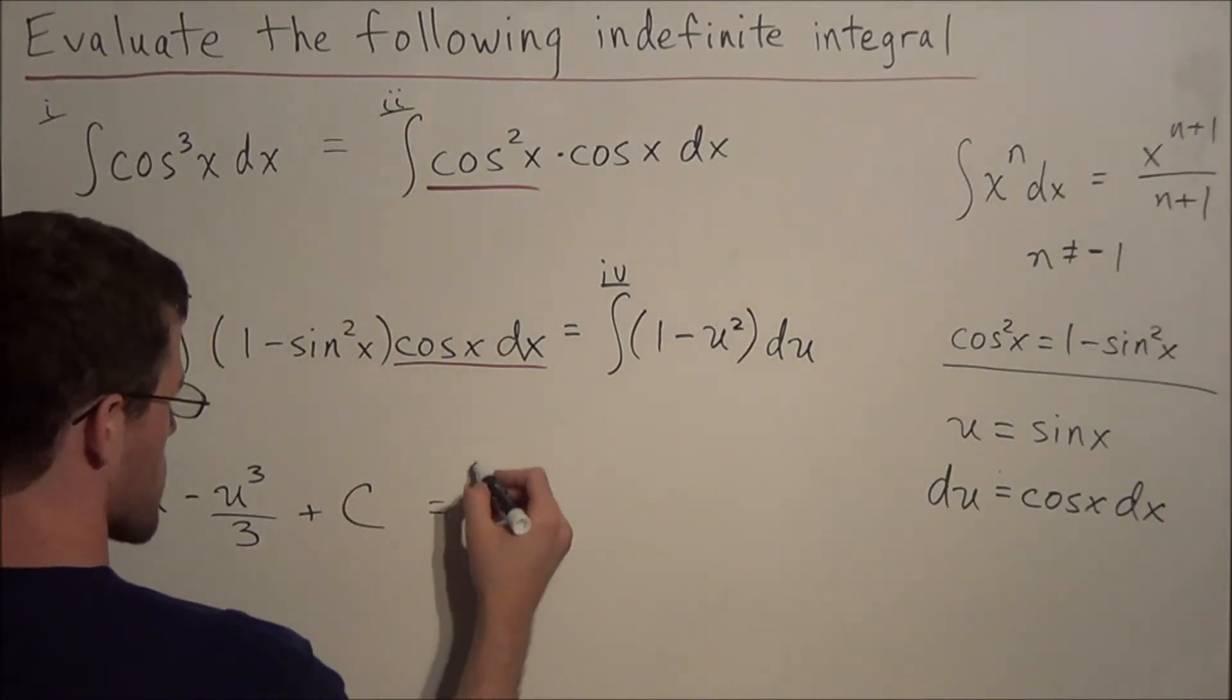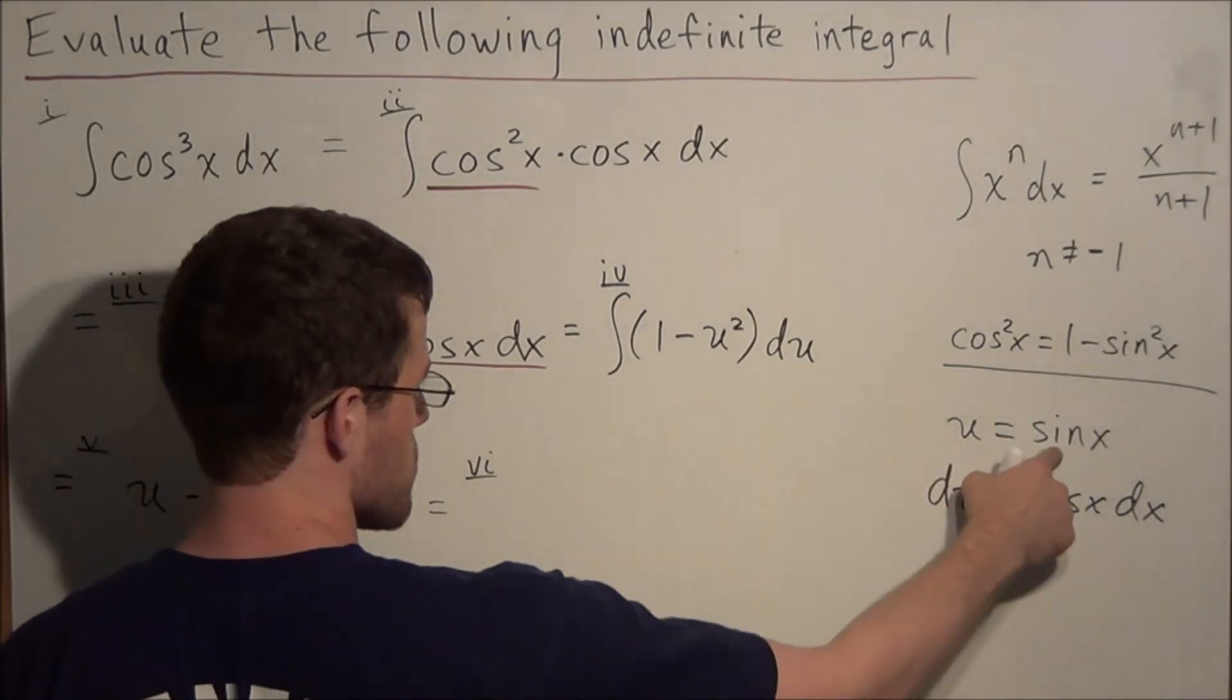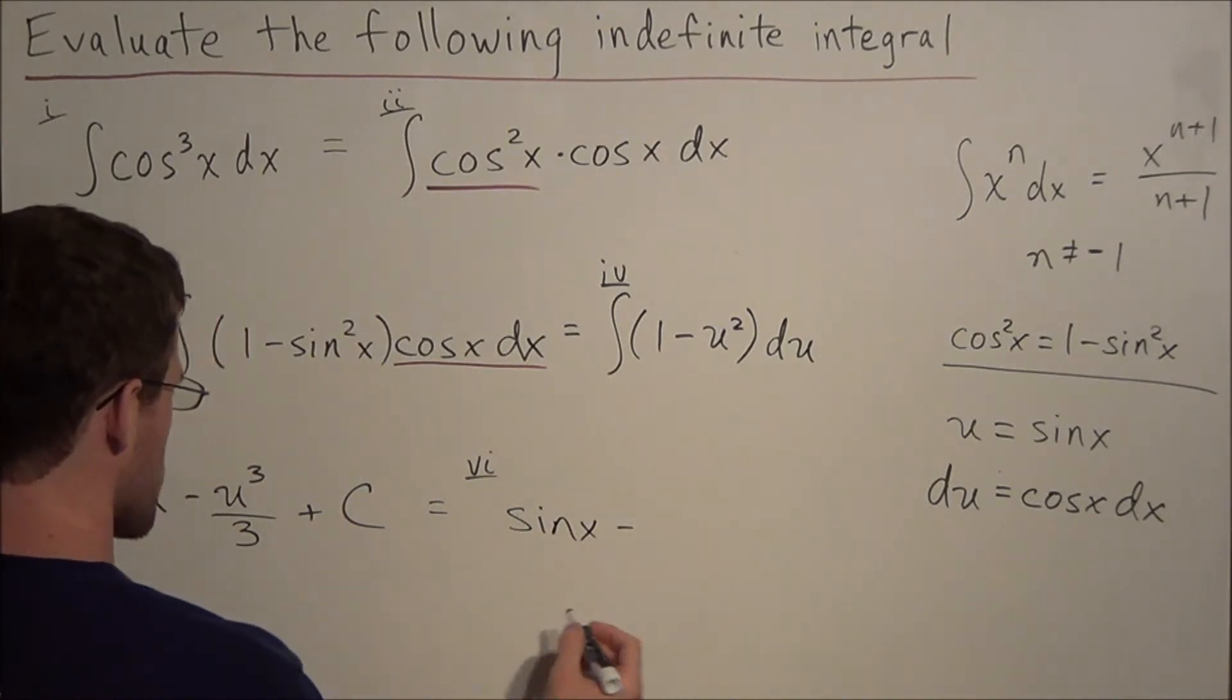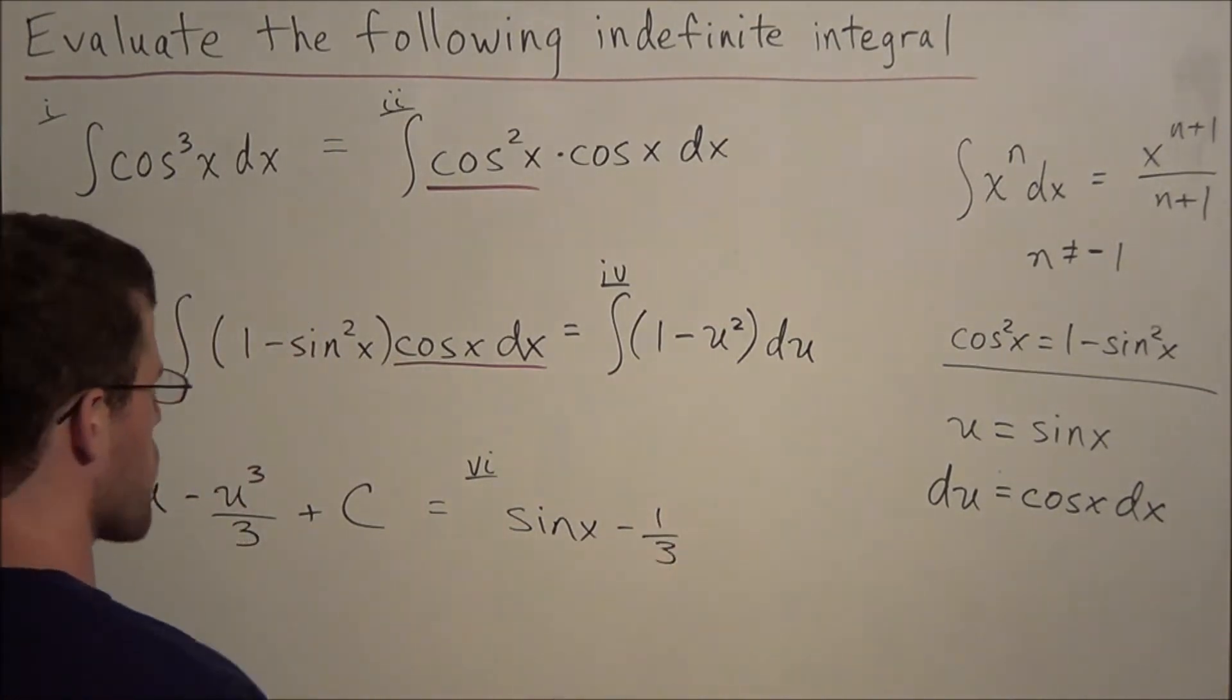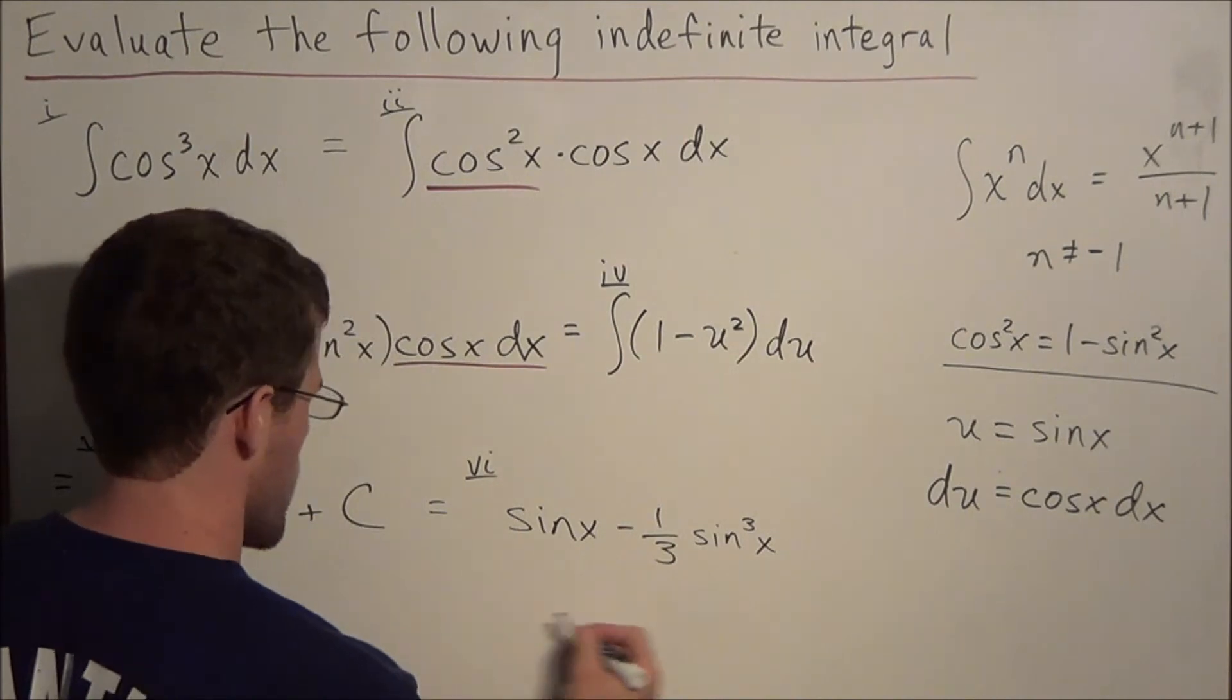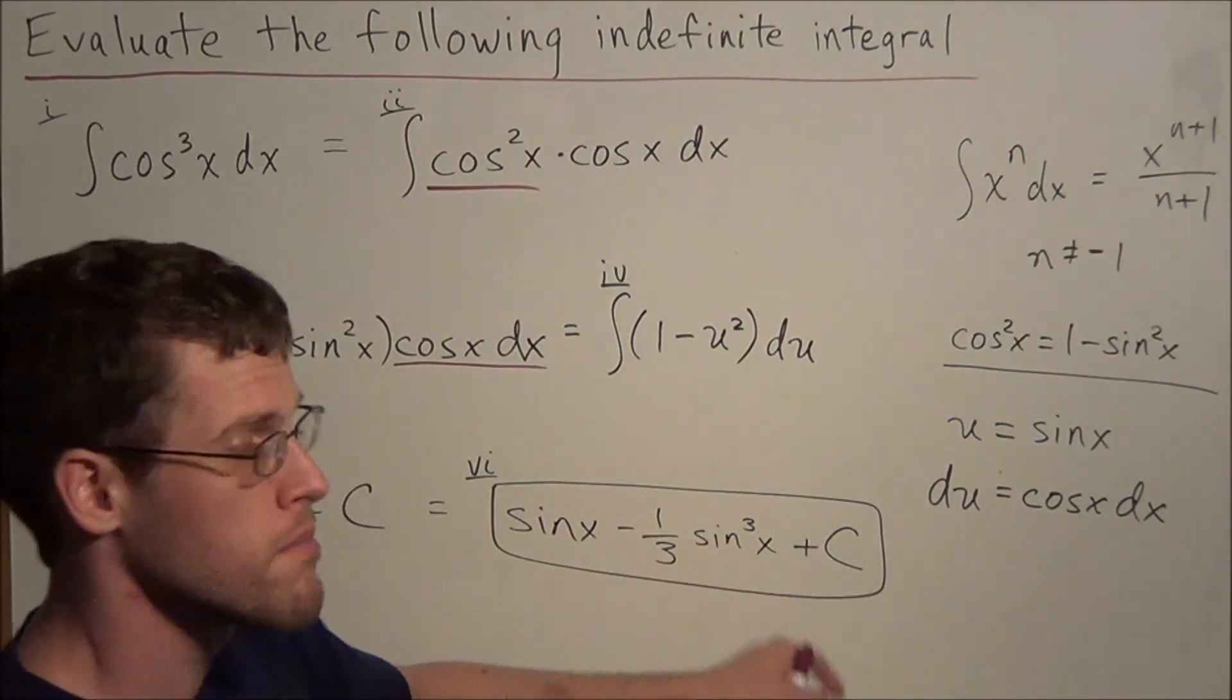So now the last step, step 6, remember we can't write our answer in terms of u because we started out with a function of x. So now all we're going to do is replace all of the u's with sine of x. So now we're going to substitute back in. So instead of u, we have sine of x minus, and now instead of dividing by 3, we're just going to write minus 1 third. It's better to write it as a coefficient, it just looks better. And now u to the third power is sine to the third x, and we have plus c. So our final answer, we have sine x minus 1 third sine to the third x plus c.